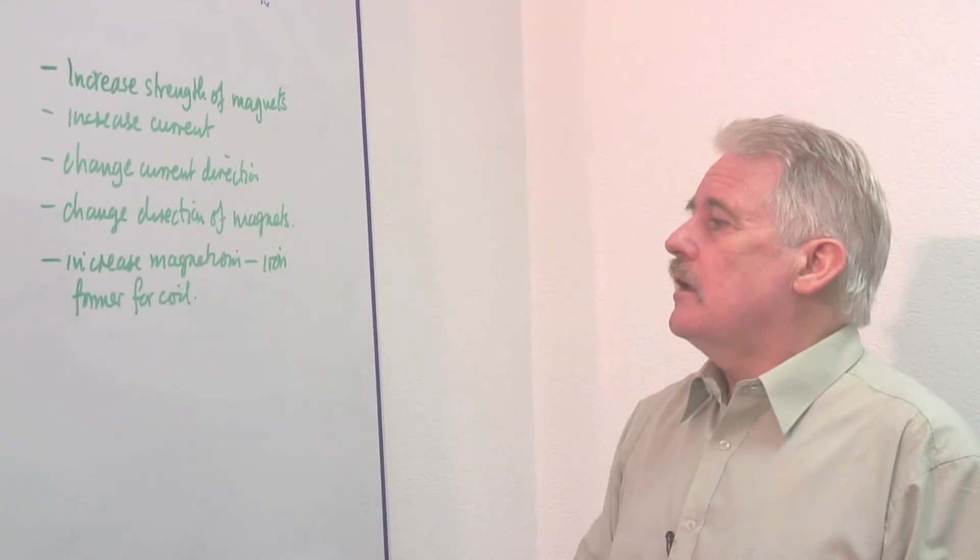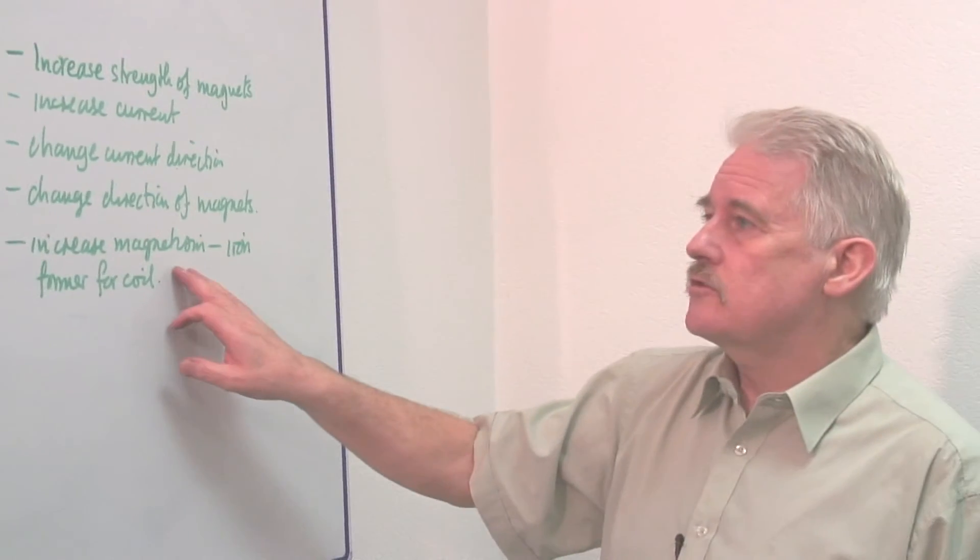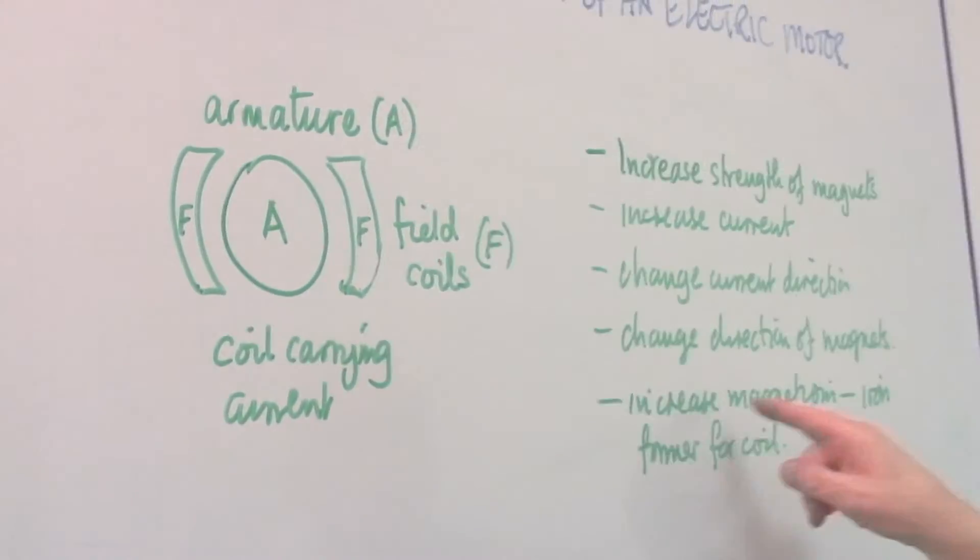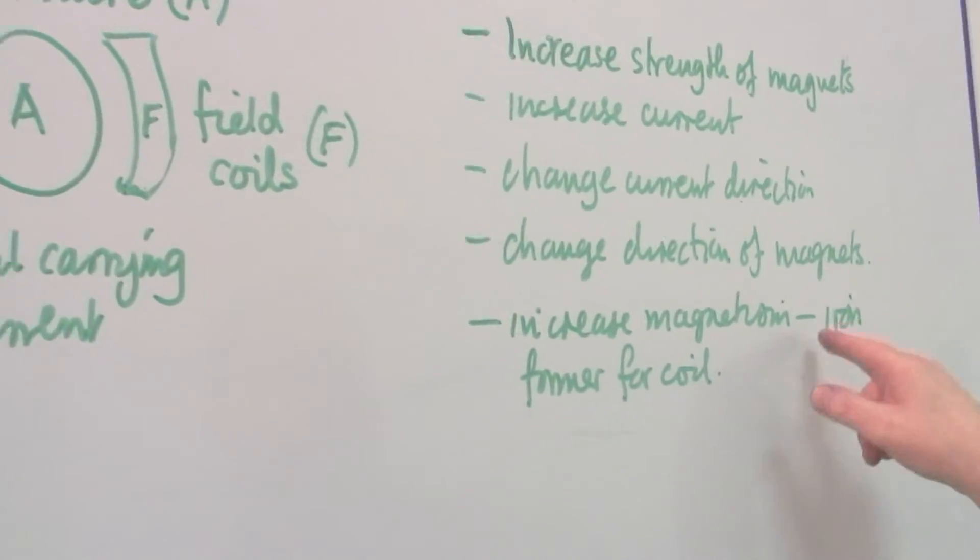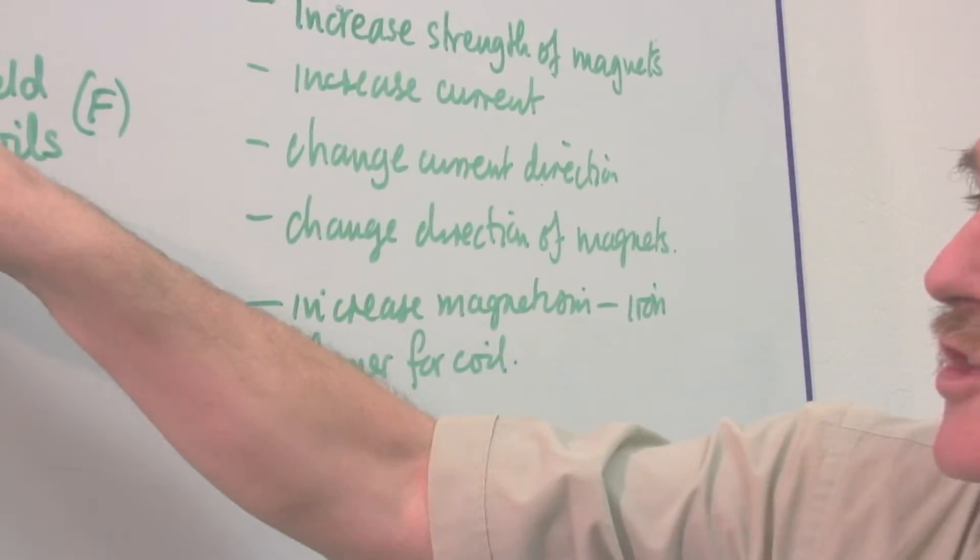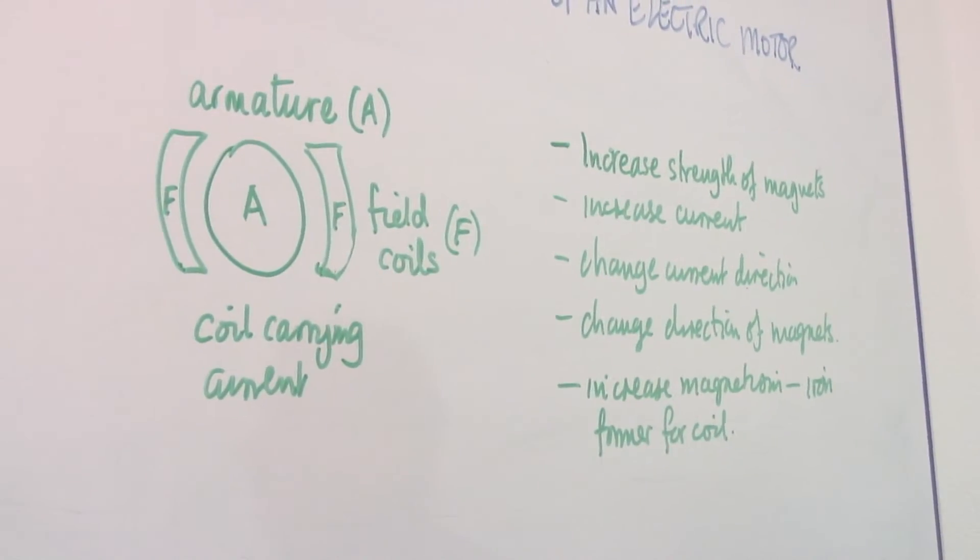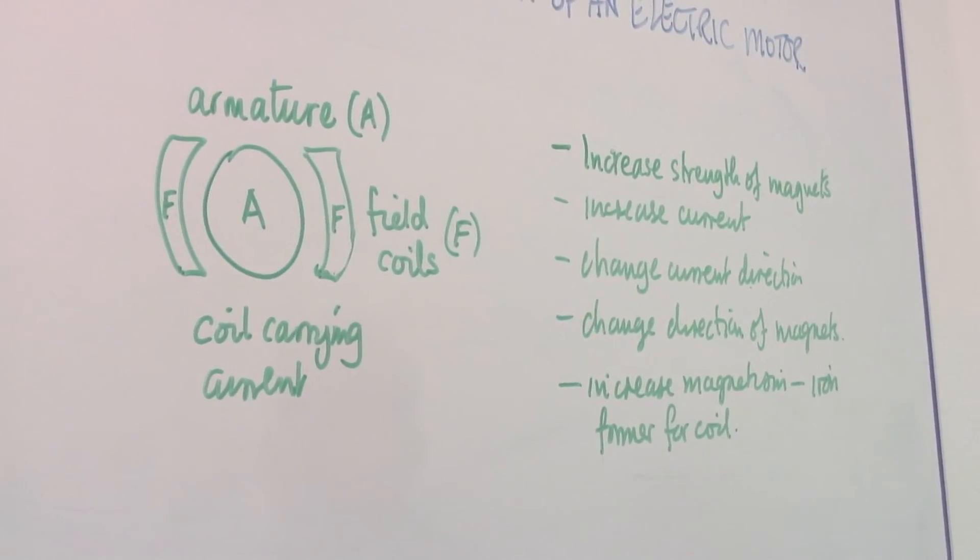Finally, if we want to increase the strength of the magnetism in the armature, we make sure the armature is wrapped on a magnetic material, on iron. This would be an iron or steel core. It also makes it heavy and makes the motor work more smoothly.